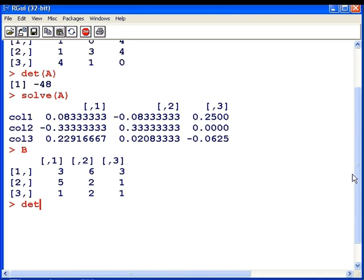First off I'm going to compute the determinant of B. Now what we have here minus 3.55 by 10 to the minus 16. The fact is that the determinant of B is actually zero.